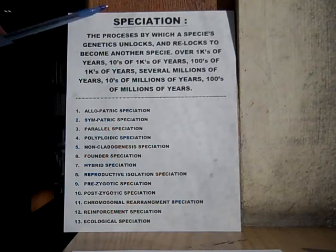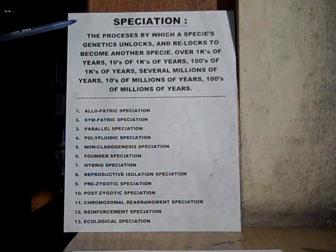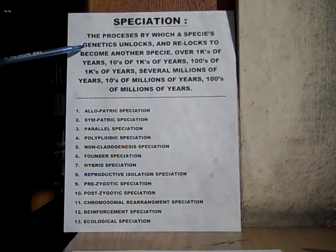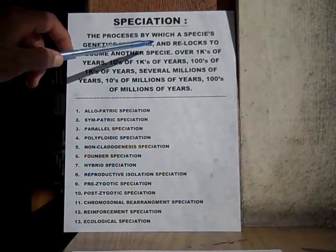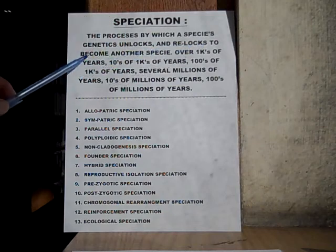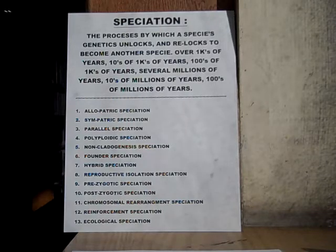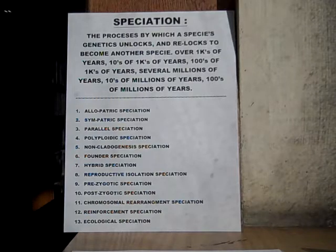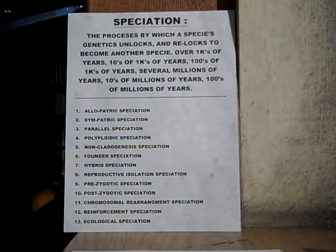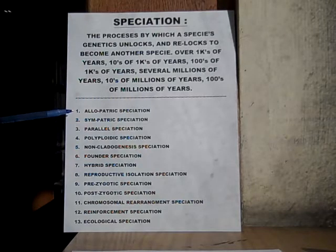Now, speciation. Speciation is the process by which a species' genetics unlocks and relocks to become another species over thousands of years, tens of thousands of years, several millions of years, tens of millions of years, hundreds of millions of years. And these speciation processes include number one: